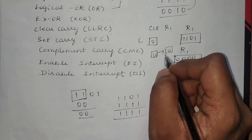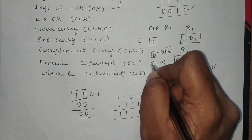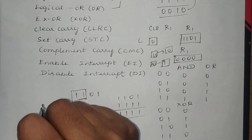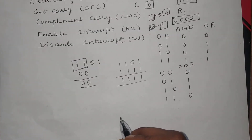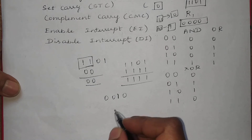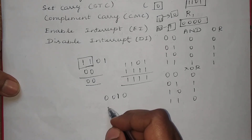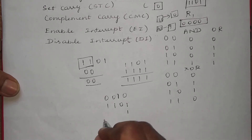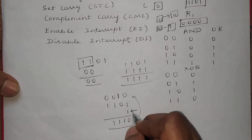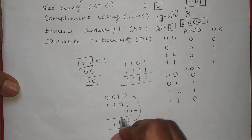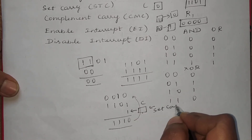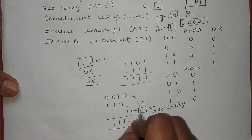The set carry instruction will set the value of the carry to 1, regardless of what value it currently holds. A practical use case is when taking the 2's complement: suppose the input is 0010, you first take the 1's complement to get 1101, and then add 1. That 1 should always be present in the carry, so you use the set carry instruction to ensure the carry bit always holds 1 and is not 0 at any cost.